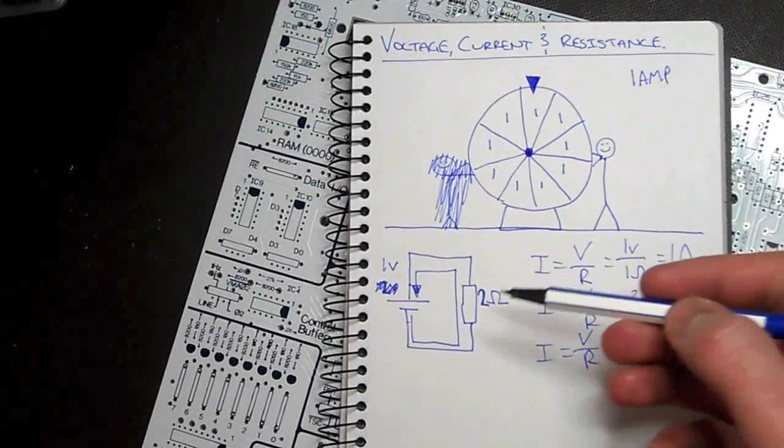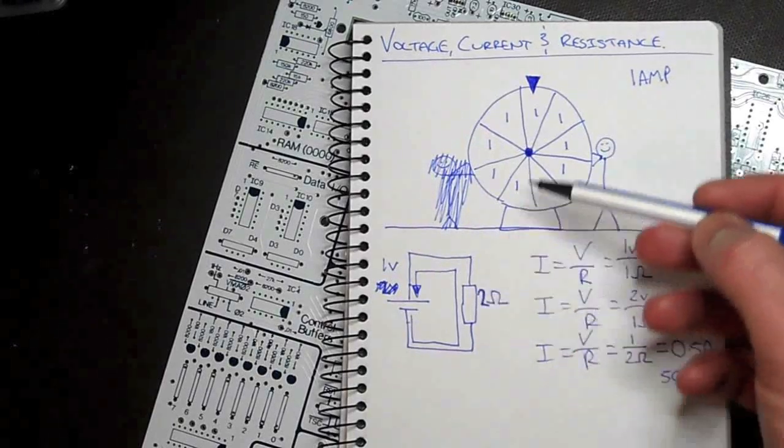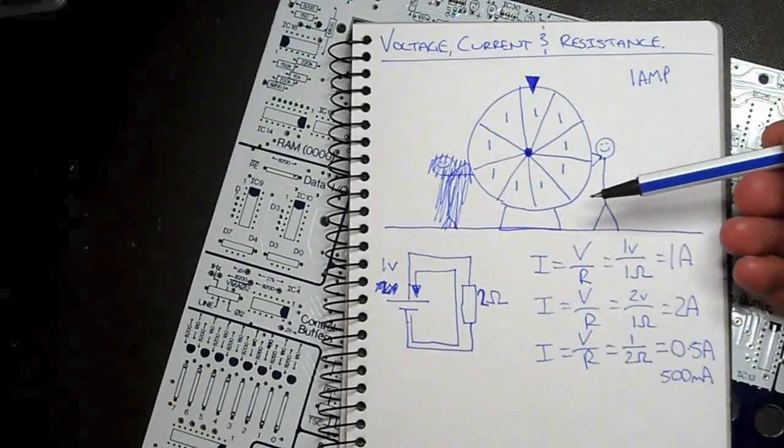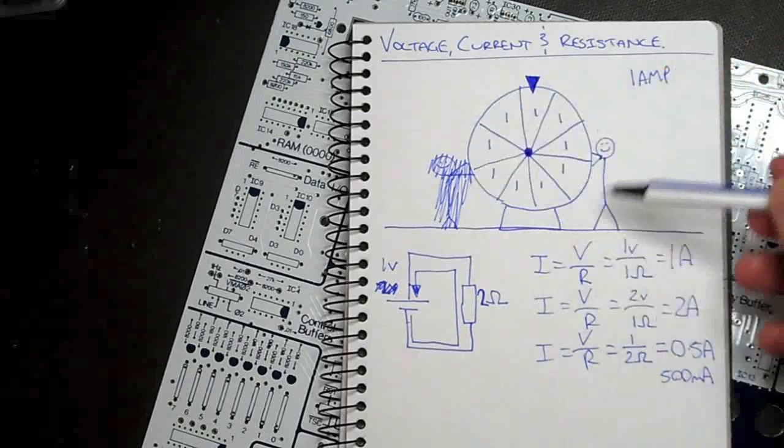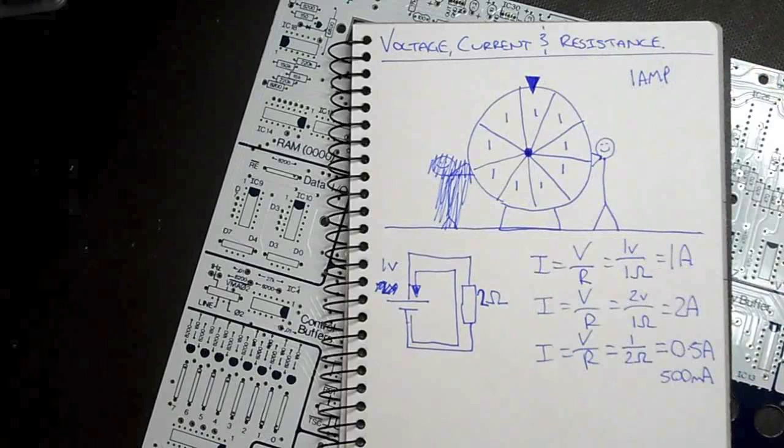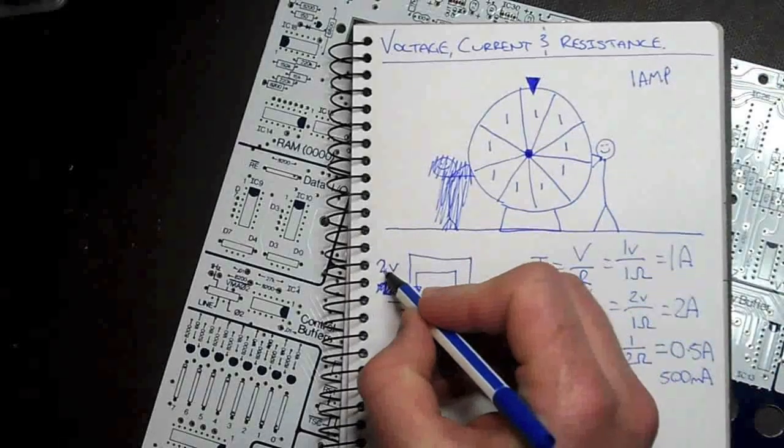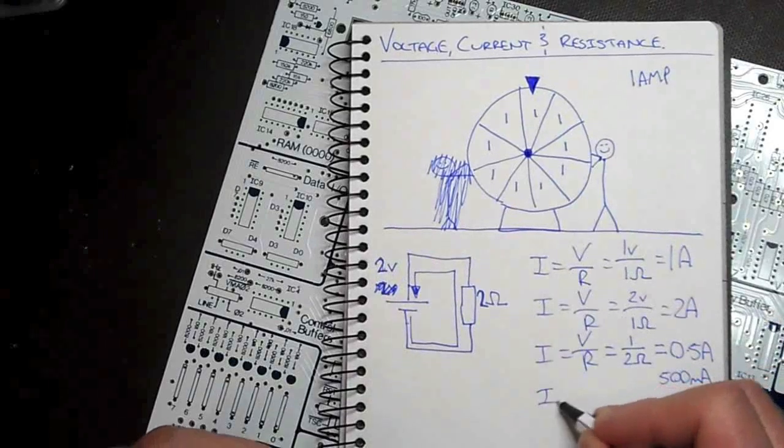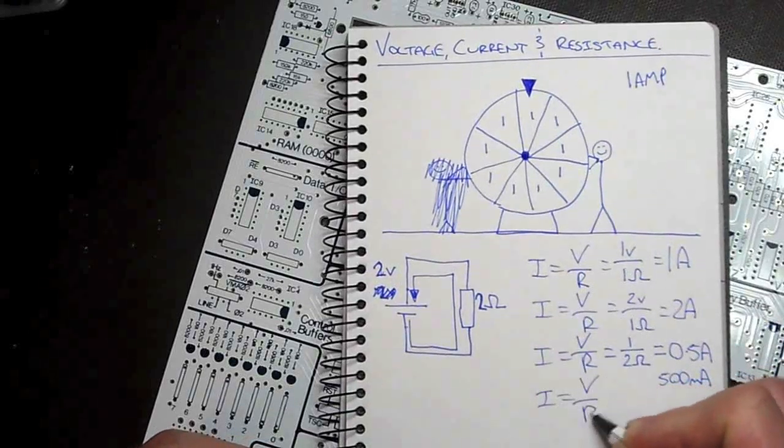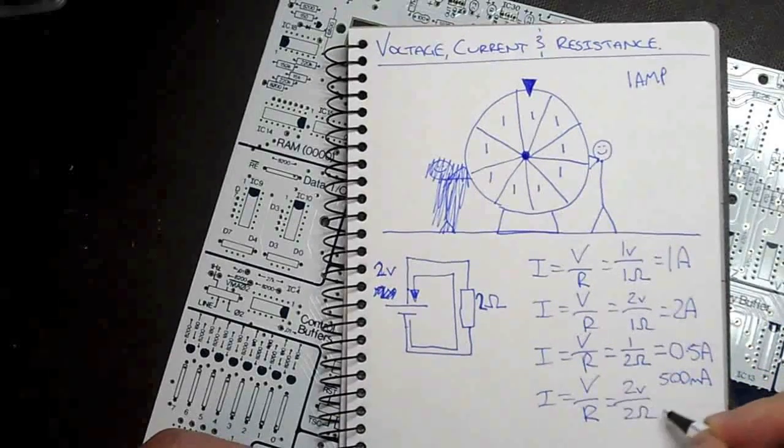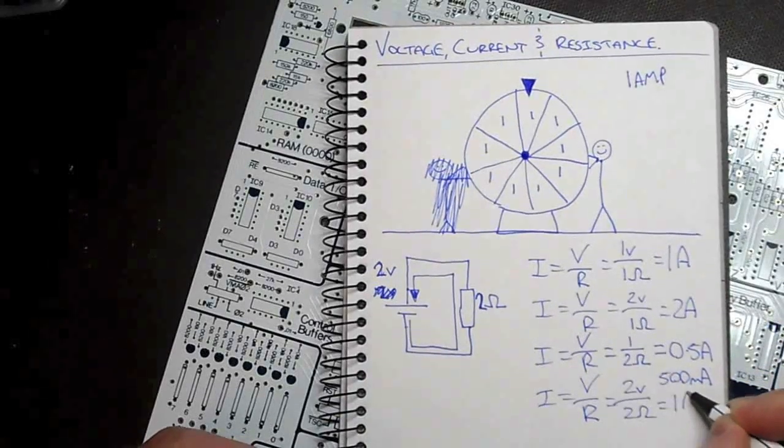To counteract for this increase in resistance, or to counteract these dodgy bearings, I would now have to push down with twice as much force in order to get it to spin at the same speed that I had before to give me 1 amp. So I'd now have to increase my voltage. So current equals voltage divided by resistance, 2 volts, 2 ohms, and I'm back to 1 amp.